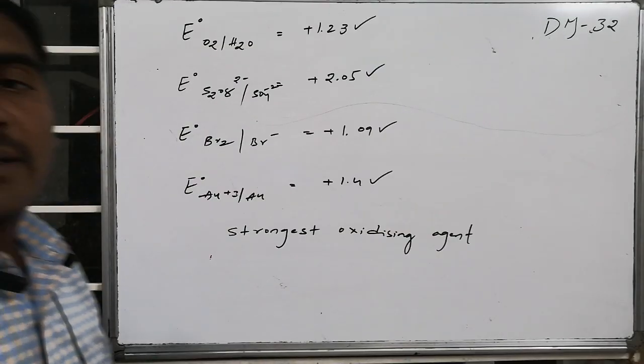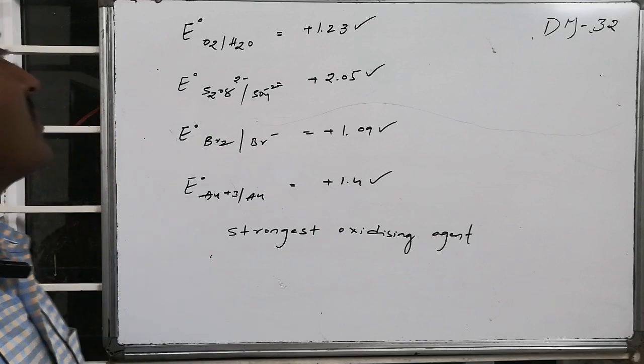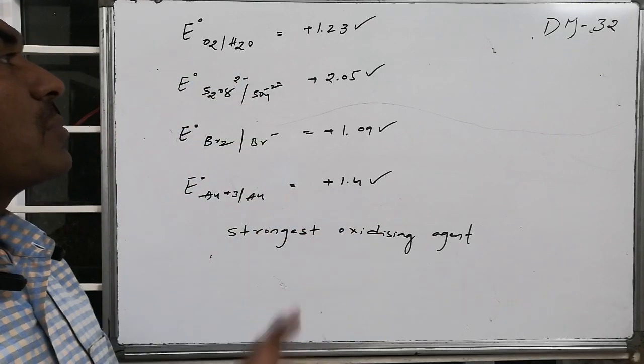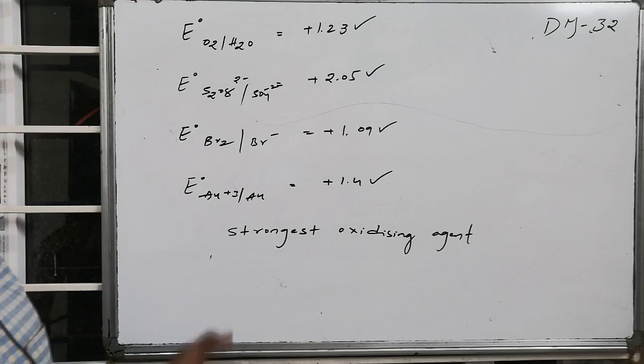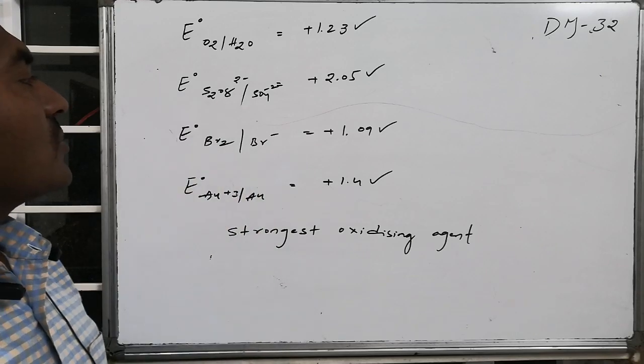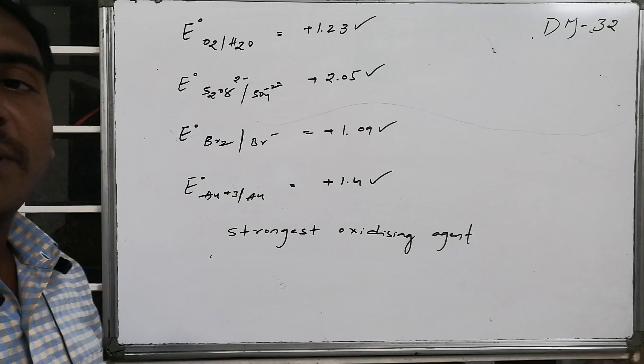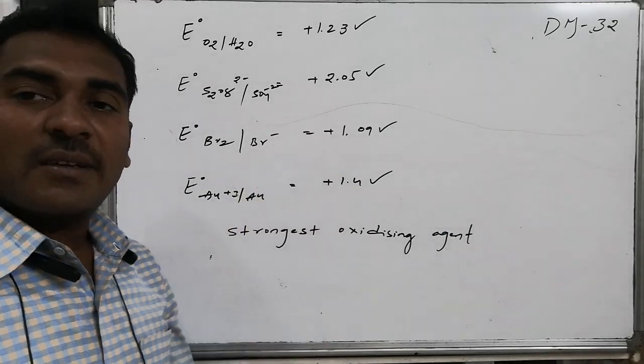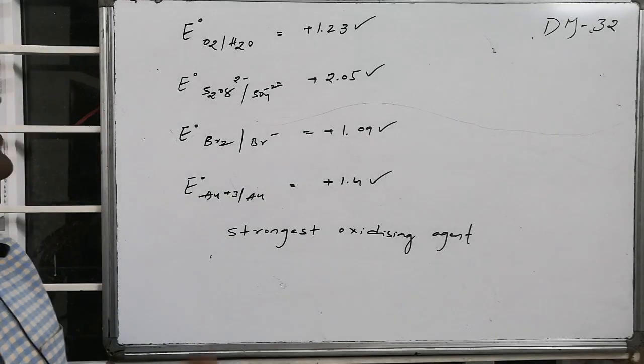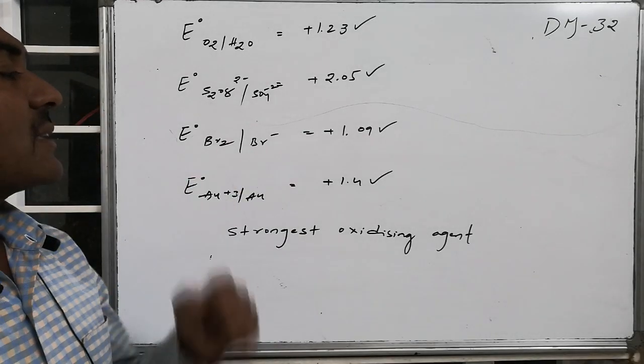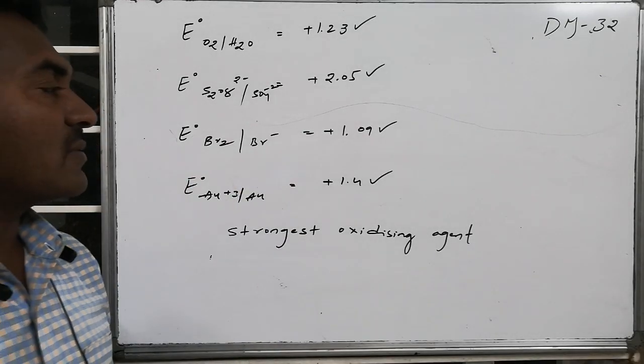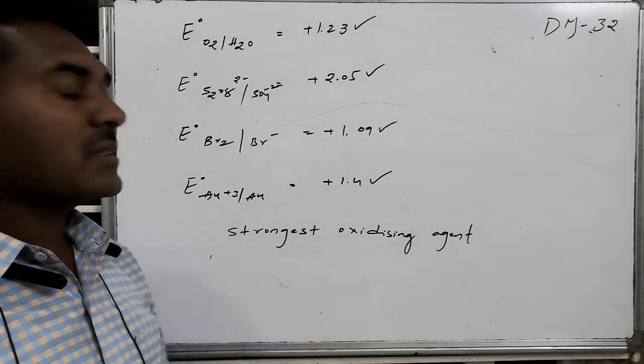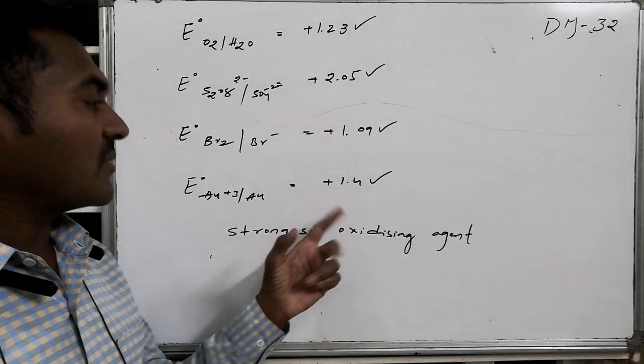Here is a list of compounds with their reduction potentials: O2 conversion to H2O is plus 1.23 volts, S2O8 2 minus converted to SO4 2 minus is plus 2.05 volts, Br2 converted to Br minus is 1.09 volts, and Rn3 plus converted to Rn0 is 1.4 volts.